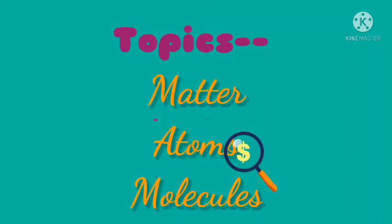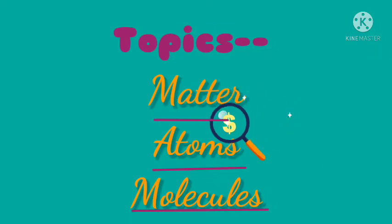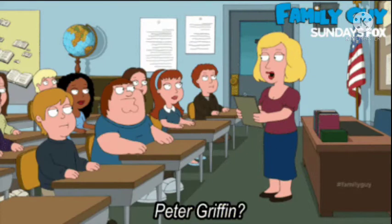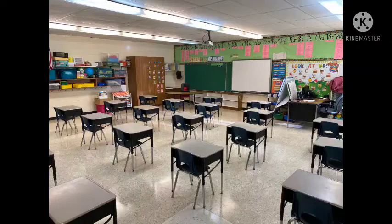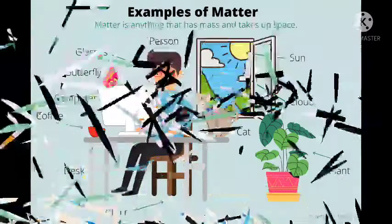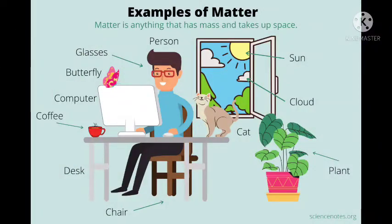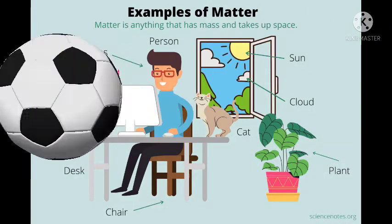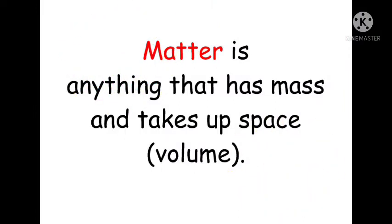So let's start with our today's topic: matter, atoms and molecules. Children, we look around us at many things like table, chair, box, ball, almira and so on. They are examples of matter. Anything that we touch, eat, etc. is an example of matter. So matter can be defined as anything that occupies space and has mass.